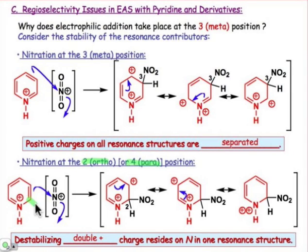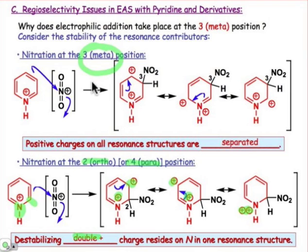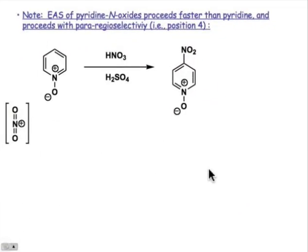Compare that to the case where we attack the 2-position, starting from the pyridinium cation. Now we have a pair of positive charges, and we can write a resonance contributor in which both positive charges reside on nitrogen. That double positive charge is something we never encounter in organic chemistry — it's ridiculously unstable. Attack is only going to take place under forcing conditions and at the 3-position, never at the 4- or 2-position because that would involve a resonance contributor with a double positive charge.